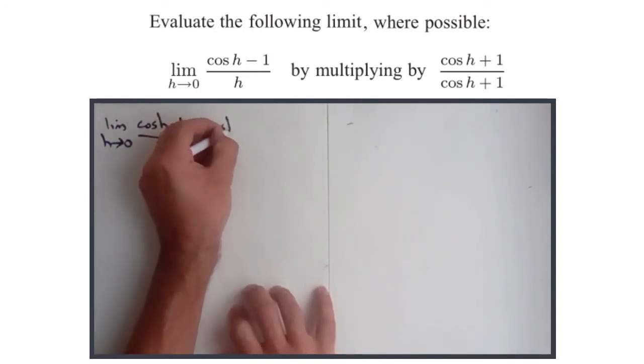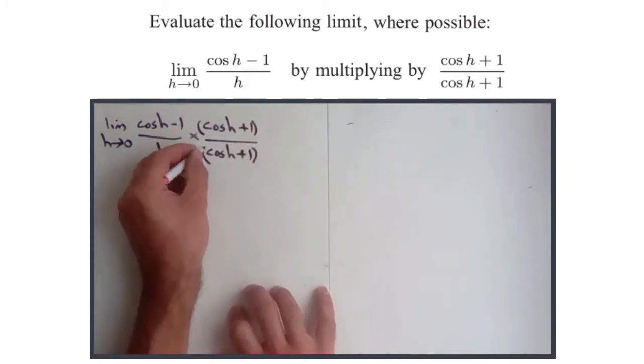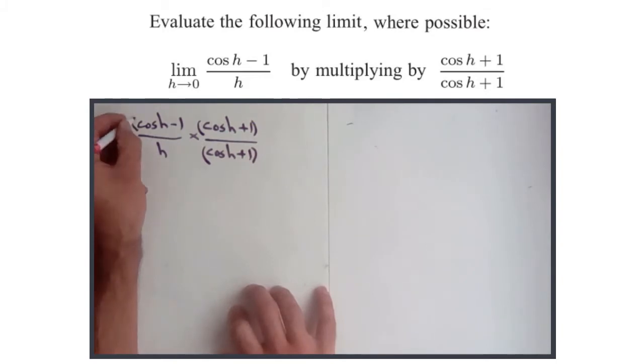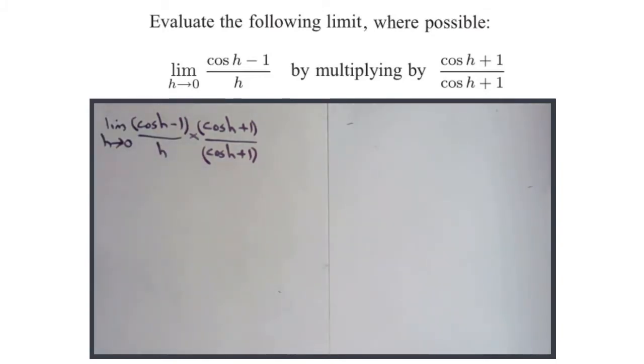So cos times cos h plus 1 over cos h plus 1. So just looking at this, firstly, we're multiplying by something over itself. So we're multiplying by 1, which means we're not actually affecting the value of the thing we're trying to find the limit of. That's one thing. Secondly, why would this be useful?